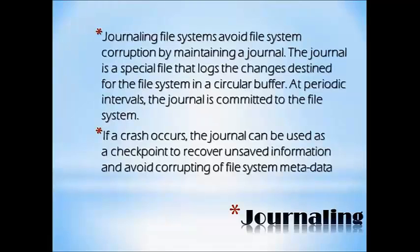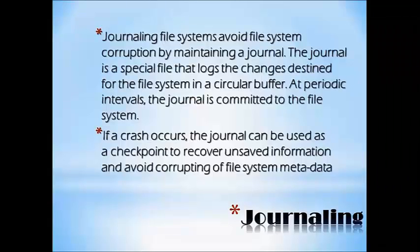Journaling file systems avoid file system corruption by maintaining a journal. The journal is a special file that logs the changes destined for the file system in a circular buffer. At periodic intervals, the journal is committed to the file system. If a crash occurs, the journal can be used as a checkpoint to recover unsaved information and avoid corrupting the file system metadata.